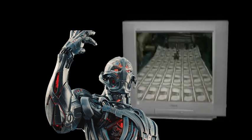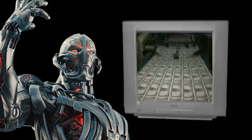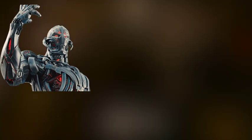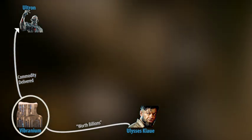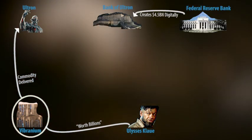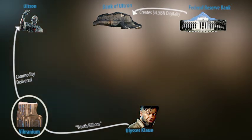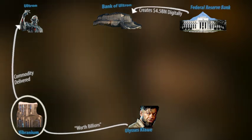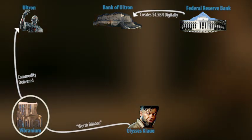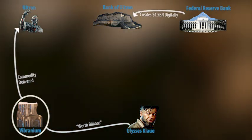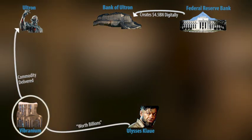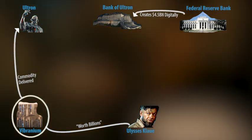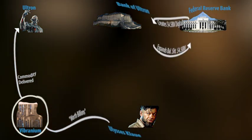Ultron firstly needs to find a few billion dollars. In order to reduce traceability of any digital transaction, Ultron would not have stolen the money from anyone. Because he controls the banking infrastructure, he would have created the money digitally — similar to how a bank creates money when they make a loan to a person or company. When the loan is paid back with interest, the money created is digitally disposed. In finance speak, bankers call this expanding the balance sheet.